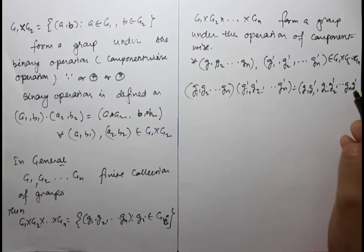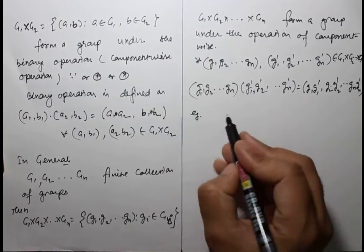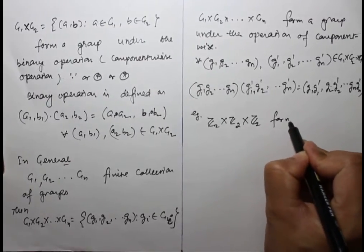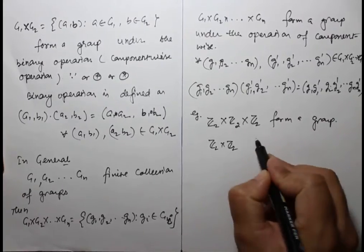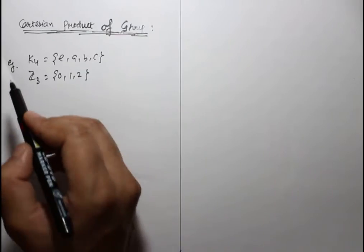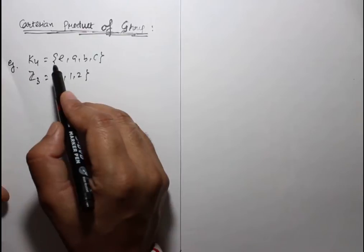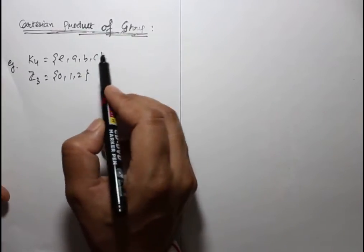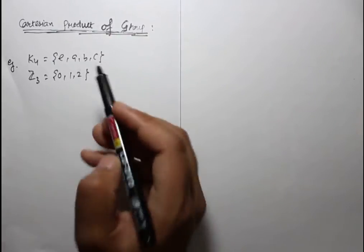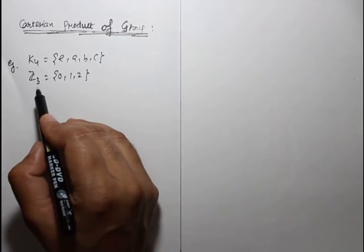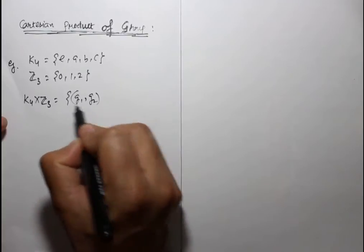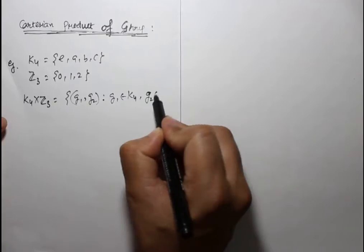For example, Z2 cross Z2 cross Z2 forms a group, Z2 cross Z2 also forms a group, and K4 cross Z3 also forms a group. Here K4 has one identity element and elements a, b, c which are all self-inverse, with a into b equals c. Z3 is a cyclic group of integers under addition modulo 3.